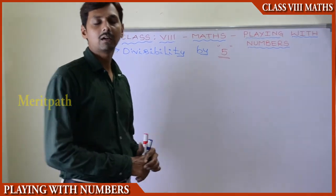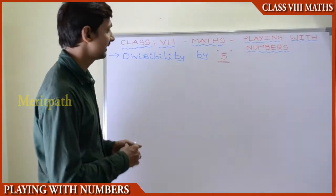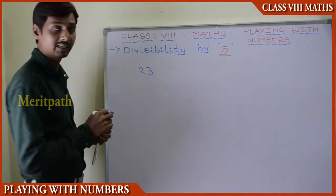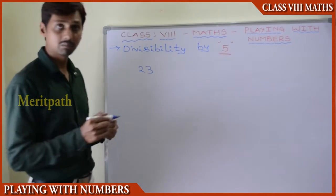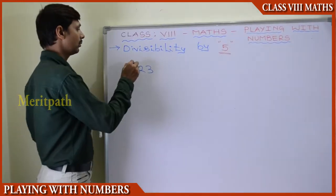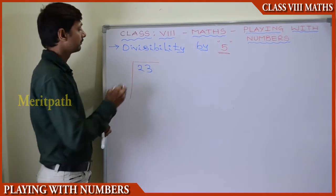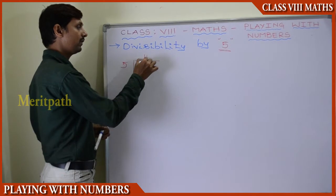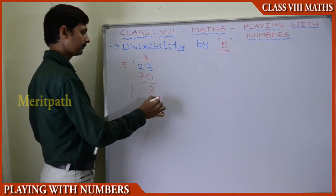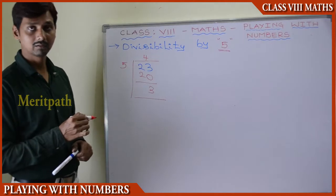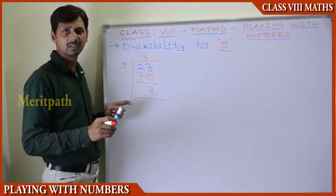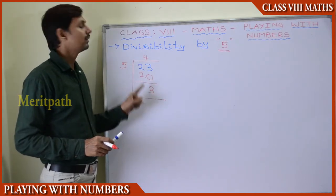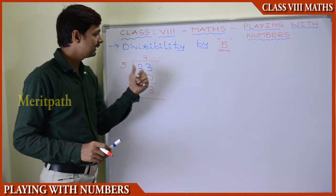Now let us see the divisibility property for 5. Let us take the number 23 and divide by 5. 4 times 5 is 20, and we get remainder 3. We got 3 as remainder, so we can say that 23 is not divisible by 5 because 3 is the remainder.